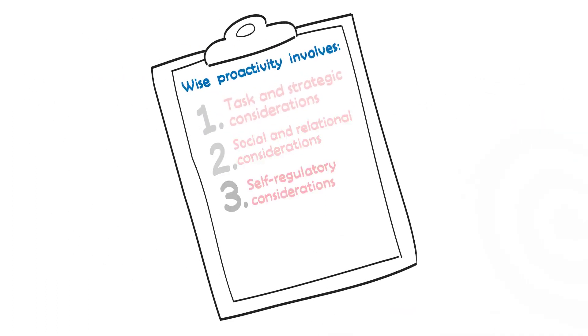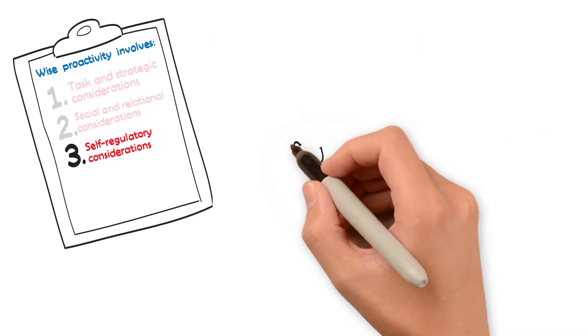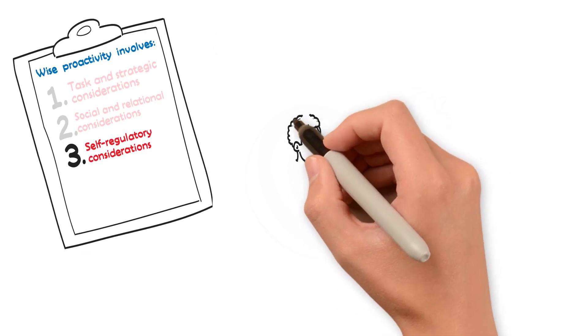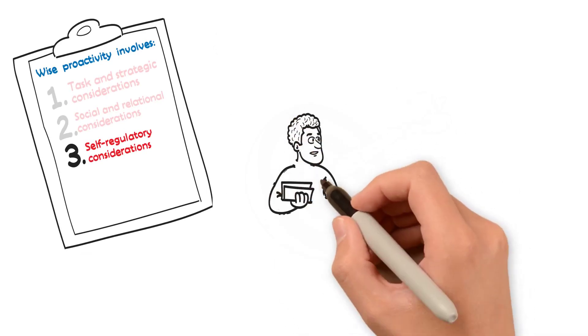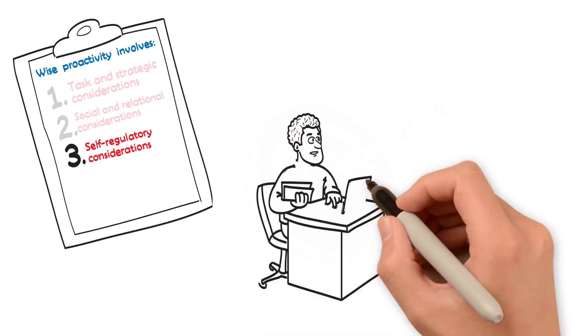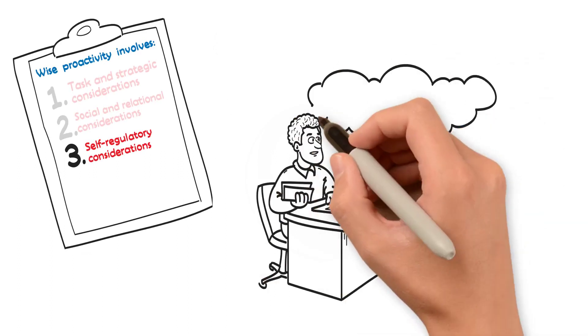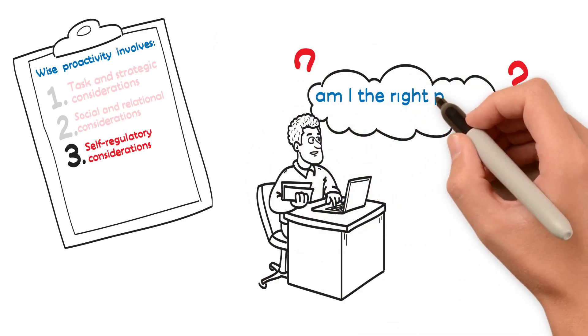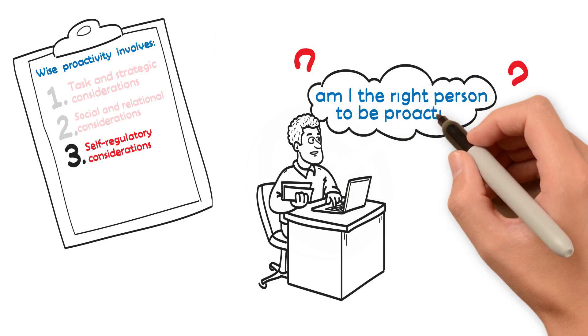Third, wise proactivity requires employees to engage in effective self-regulation. This means managing one's own feelings and interests. For instance, employees need to consider, am I the right person to be proactive given my interests, expertise, and resources?